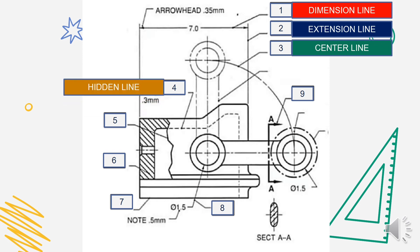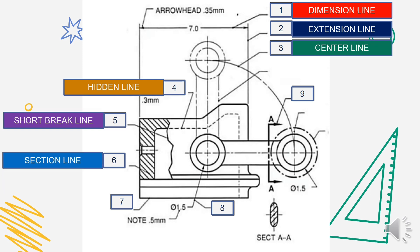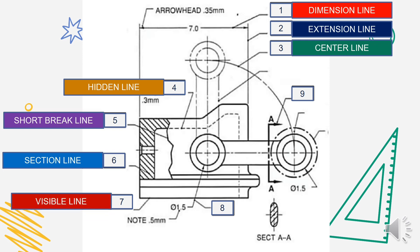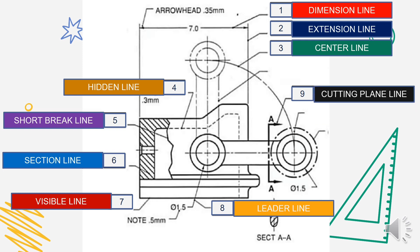Number 5: the answer is short break line. Number 6: the answer is section line. Number 7: it shows the visible edges — the answer is visible line. Number 8: the answer is leader line. Number 9, the last one: the answer is cutting plane line.